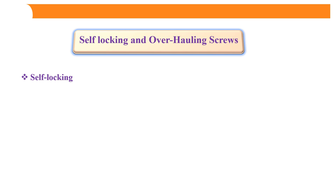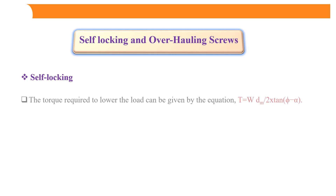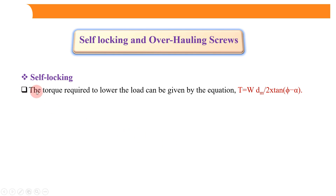Let's start with self-locking — what it actually means. The torque required to lower the load can be given by the equation: T equals W times Dm divided by 2, times tan(φ − α). Once we are lifting anything with the help of a power screw, to lower that load, this torque equation applies.